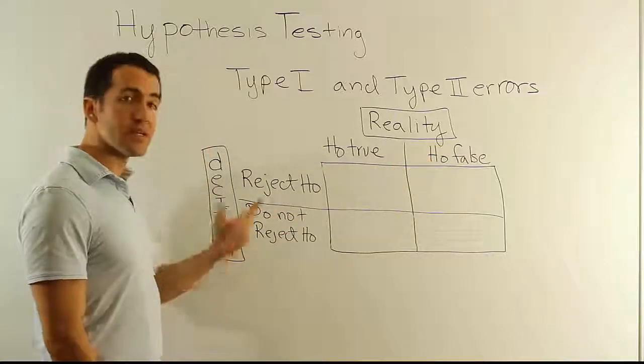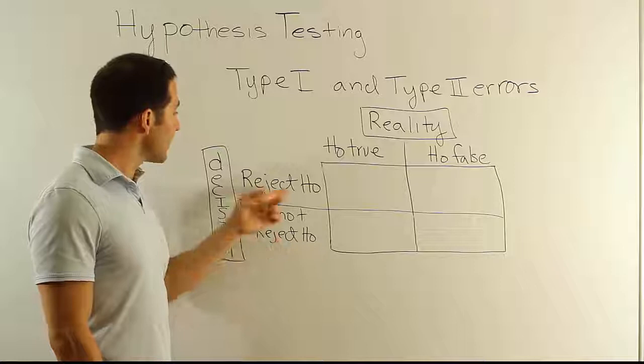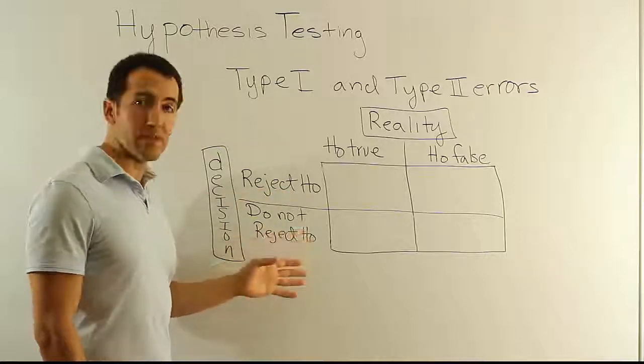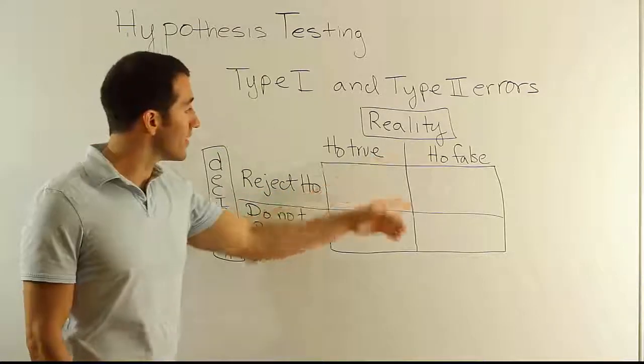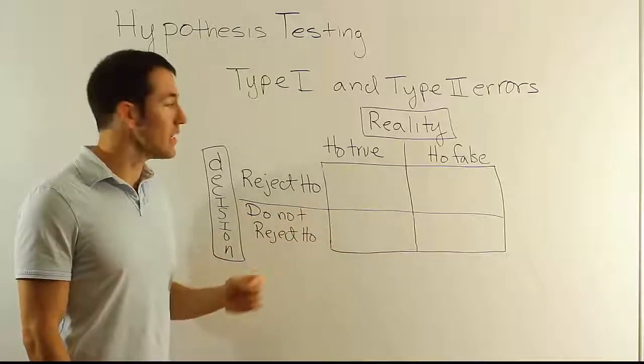Now, our decision, because we're always testing the null hypothesis, is either that we can reject the null or we don't reject the null. So that only gives us two possible options. Putting it all together gives us a total of four unique options that can occur.